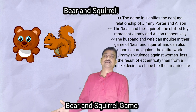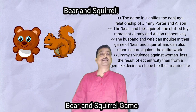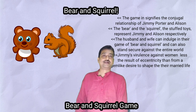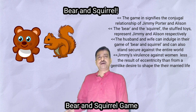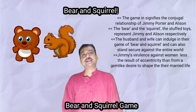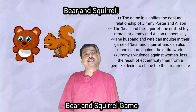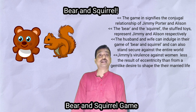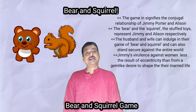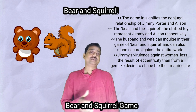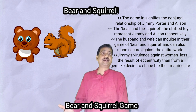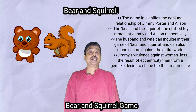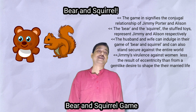In the final section, I'll carry out the discussion of the bear and squirrel game — a symbolic one. Jimmy's virulence against women is therefore less the result of eccentricity than that of a game-like desire to save the nest and adequately mate. Once that is shared, the husband and wife can indulge in their game of bear and squirrel and can stand secure against the entire world.